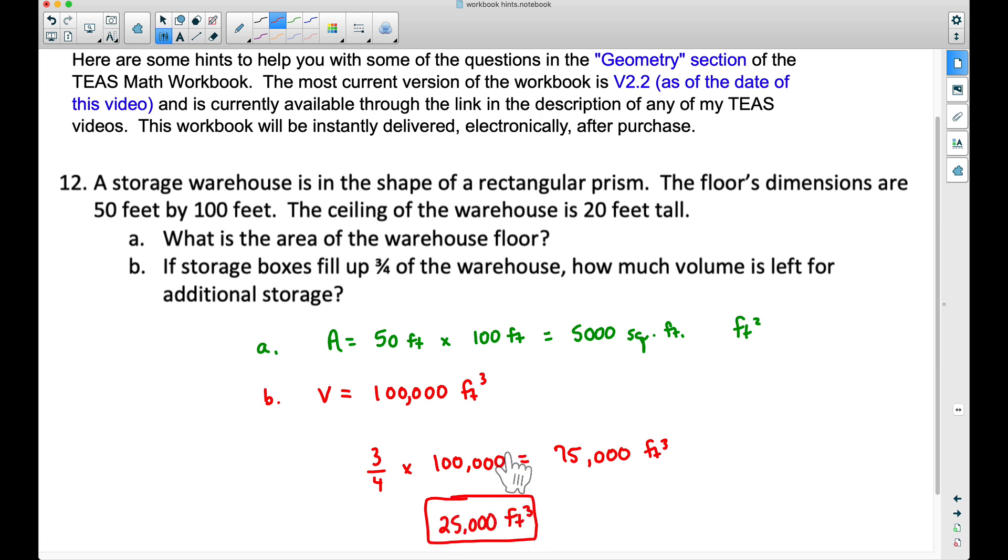And an additional way of looking at this, if three-fourths of the warehouse is full, that leaves one-fourth that is not full. So what you could do is you could come and take one-fourth of 100,000 and that will take you straight to this answer as well. Both approaches are fine.